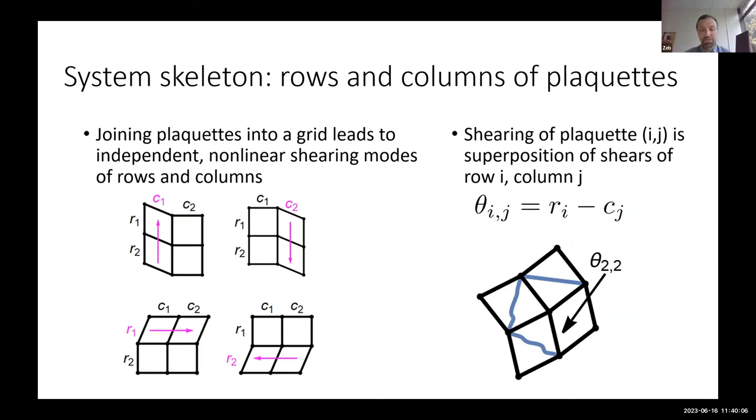If we start taking these simple squares and sticking them together, what we start to get is column and row modes. If I think about how I shear these, but I want to remain in the two-dimensional plane, this is a two-dimensional study, then the only way to deform these is to shear a whole column or a whole row all at the same time. But we can do both. We can shear some columns by some amount and some rows by some amount. And consequently, how much I have sheared a particular plaquette is equal to the amount by which I've sheared its whole row minus the amount by which I've sheared its whole column.